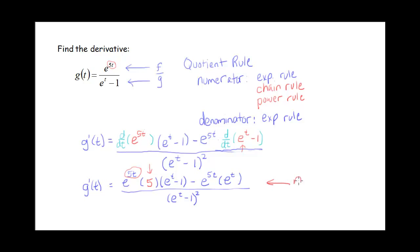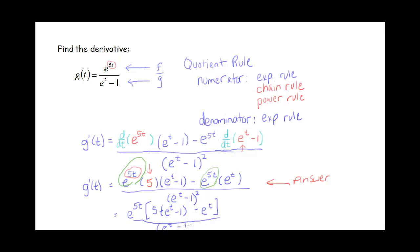This is how I just want you to leave your answer. If you wanted to simplify, you could see that we have an e to the 5t in both terms, so I can factor that out. That gives me e to the 5t times 5 times e to the t minus 1, minus e to the t, all over e to the t minus 1 squared. Simplifying in there gives us e to the 5t times 4e to the t minus 5, over e to the t minus 1 squared. On tests and quizzes, I would prefer just the unsimplified answer.